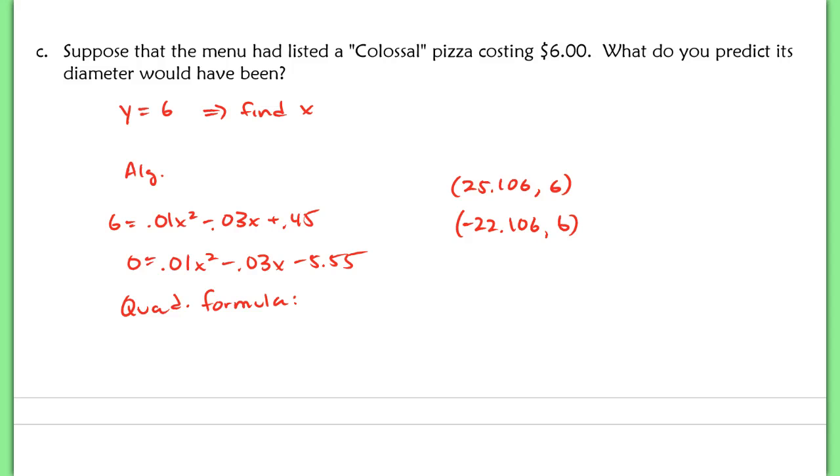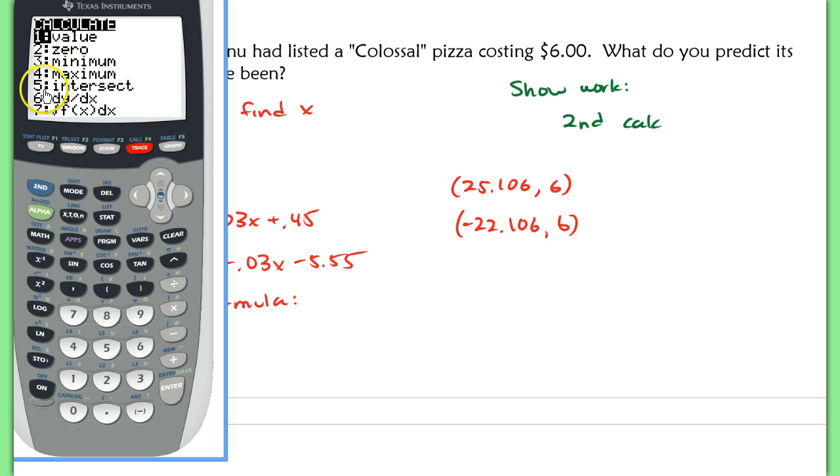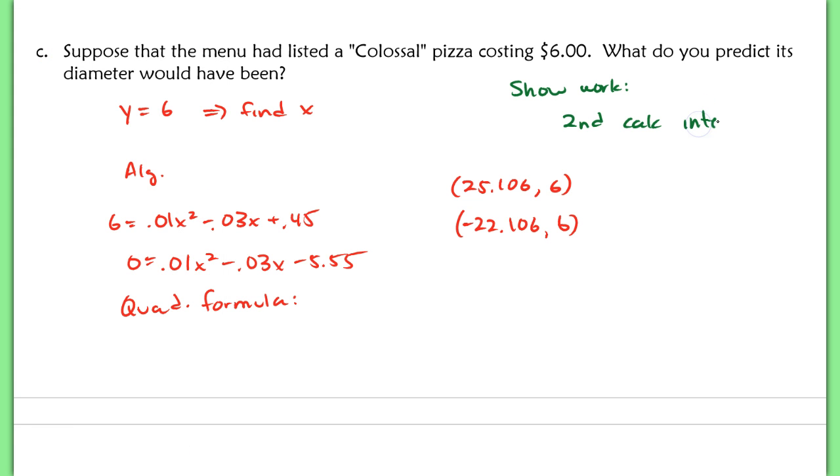Now, let's interpret these. So one of the other things is, too, I didn't write down here, but we want to show work when we do that calculator part. So I want you to show what you're entering. You're going to do 2nd calc, and then we went down to intersect. So 2nd calc intersect is what I would want you to write down. And then you're going to show both coordinates.